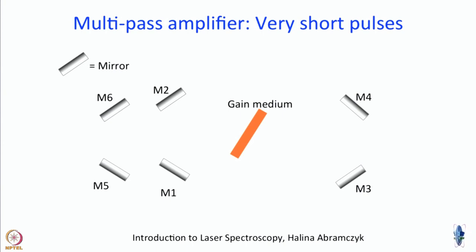In our lab, we have a regenerative amplifier. When do you choose which one? You choose a multipass amplifier when your pulses are really very short — 6 femtoseconds, 10 femtoseconds — but the output generally does not have as much power as you can get in a regenerative amplifier. Sometimes, if you want an ultra-short pulse as well as high power, you might have to use both a multipass and a regenerative amplifier.